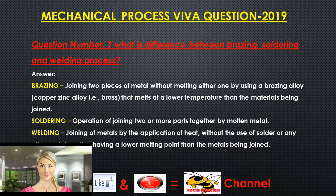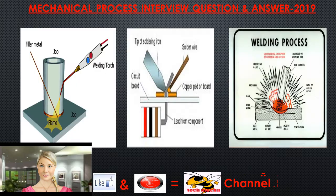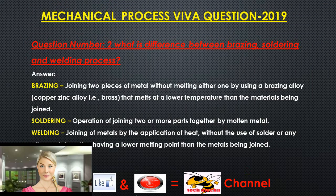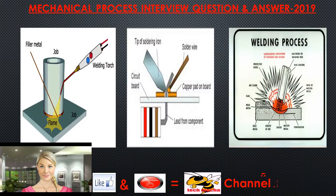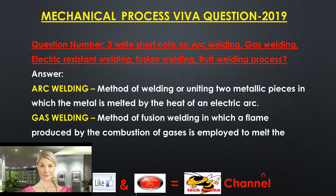Question 2: What is the difference between brazing, soldering, and welding process? Brazing is joining two pieces of metal without melting either one by using a brazing alloy — a copper-zinc alloy, i.e., brass — that melts at a lower temperature than the materials being joined. Soldering is the operation of joining two or more parts together by molten metal. Welding is the joining of metals by the application of heat, without the use of solder or any other metal or alloy having a lower melting point than the metals being joined.